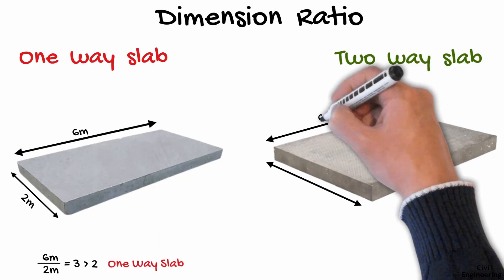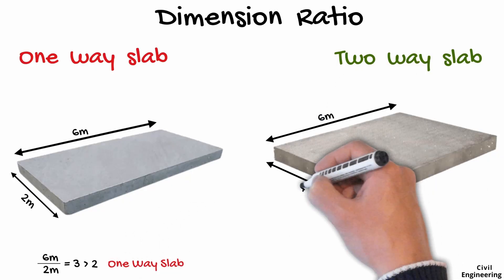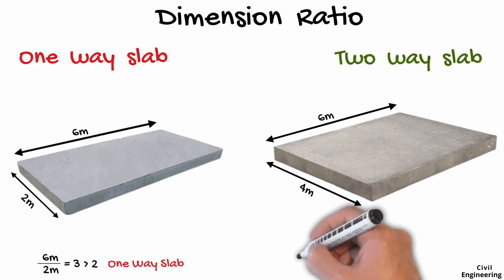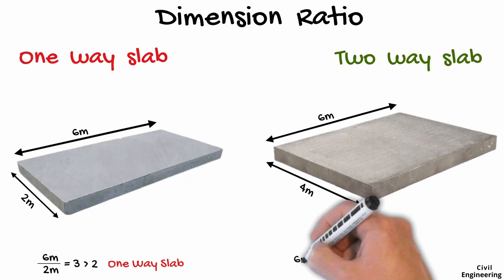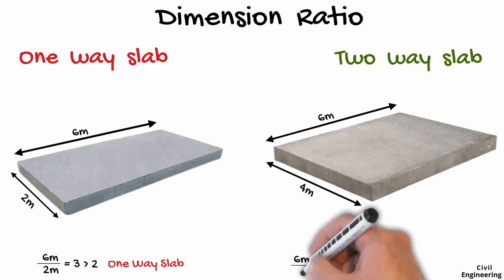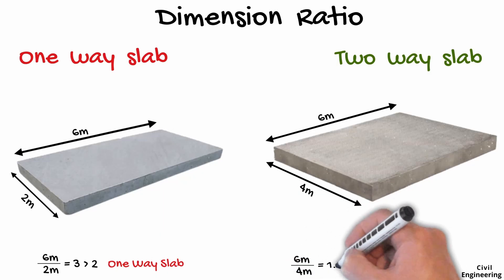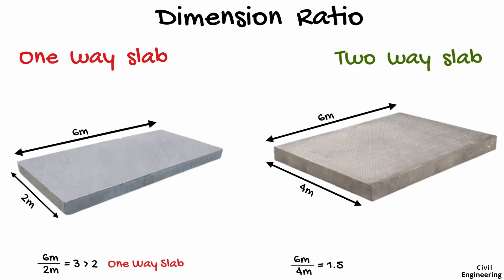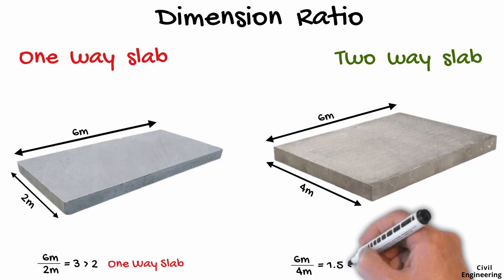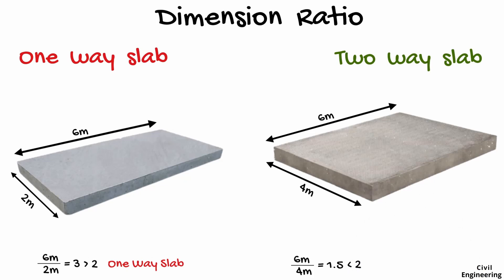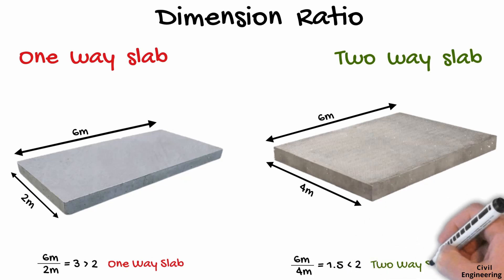Now let us consider another slab with a length of 6 meters and a width of 4 meters. When we divide the length by the width, we get a ratio of 1.5, which is less than 2, so this slab will be known as a two-way slab.